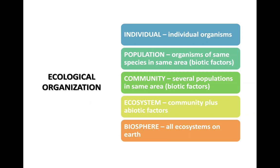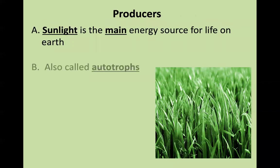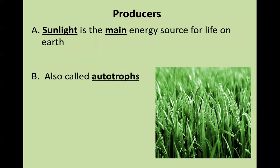Then we have the biosphere, which is the total sum of all the ecosystems on Earth. We can further divide our biosphere into biomes, and we'll talk about that in our next lesson. As we consider the interactions among organisms and their environment, we need to distinguish between producers and consumers.